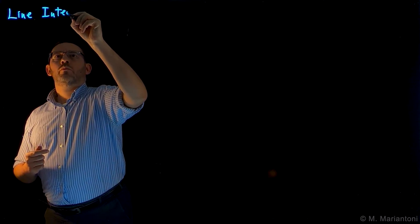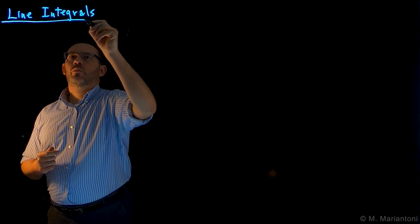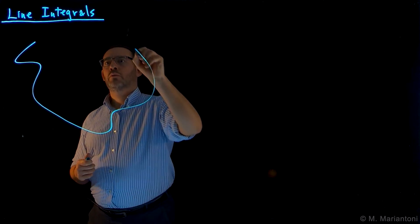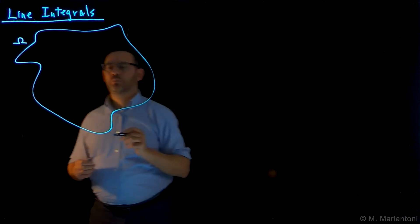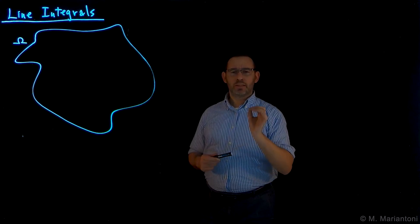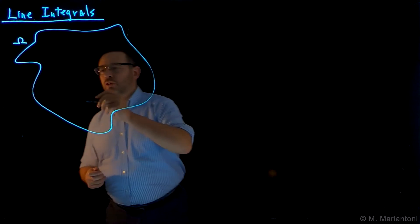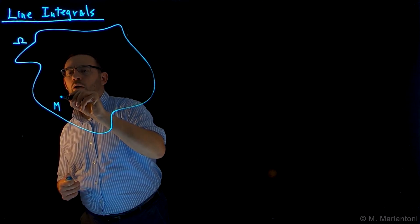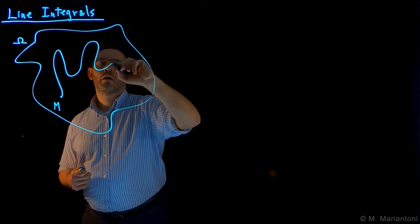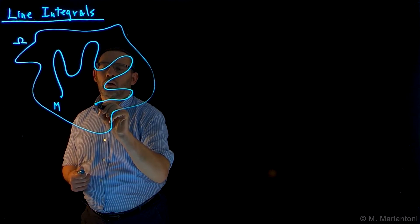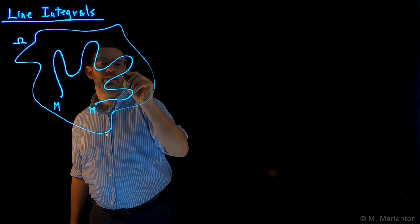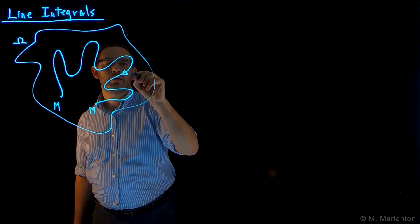The name of this video is Line Integrals. Suppose we have a three-dimensional region of space, which as always we call capital omega. Suppose that in this region of space we identify a generic line gamma which is oriented and it goes from point M to point N. This line is oriented from M to N — this is our line gamma.